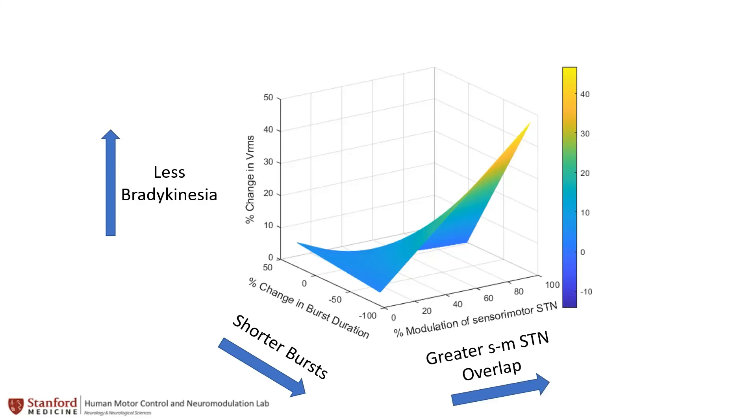Together, our results show the interaction between physiology, anatomy, and behavior by showing that DBS-related improvements in behavior are contingent on the reduction in the beta oscillopathy and stimulation overlap of the sensory motor portion of the STN.